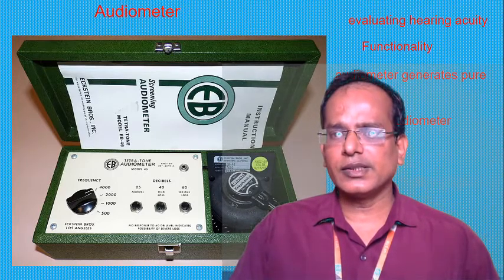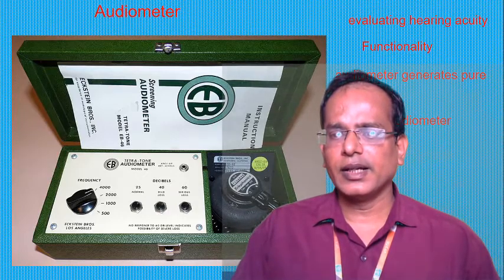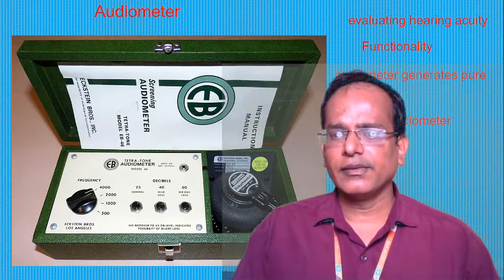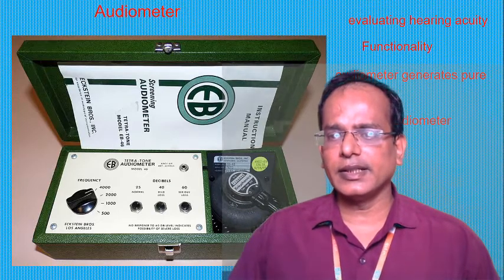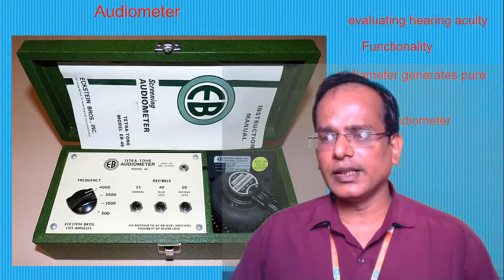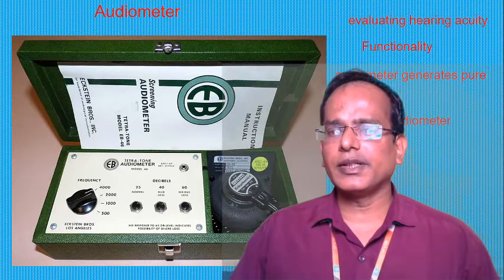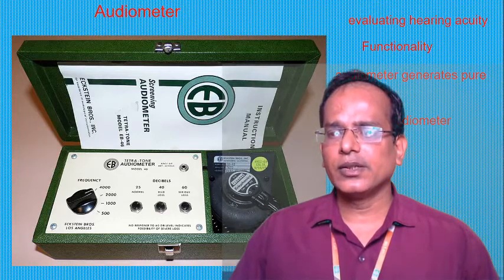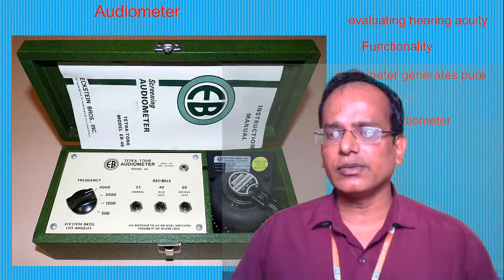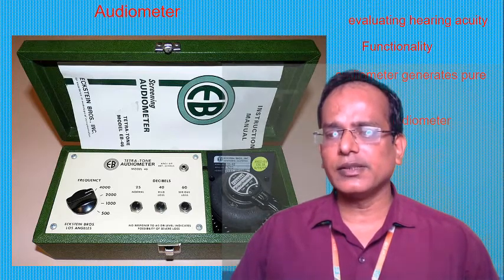Before we proceed, we will learn some basic information about hearing losses. The hearing threshold of an individual may be assessed by both objective and subjective methods. There are two kinds of methods to obtain a hearing loss measurement: the objective method and the subjective method.